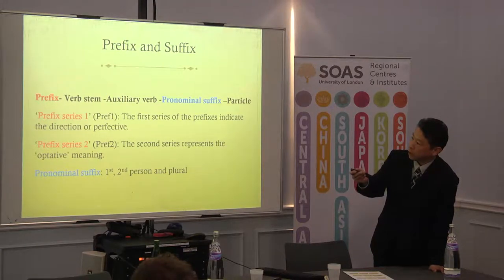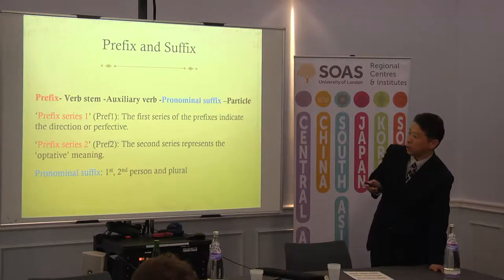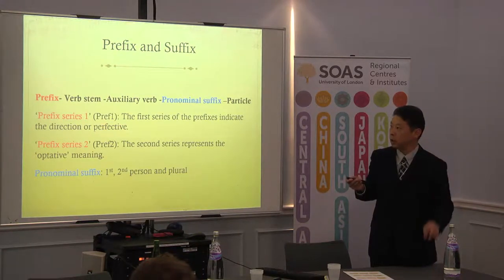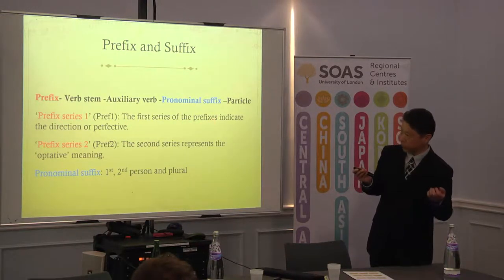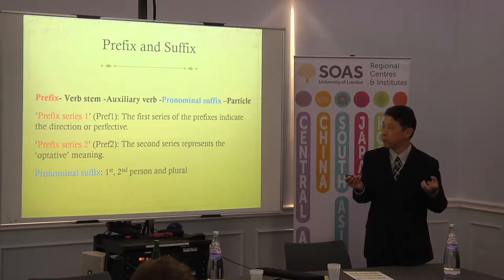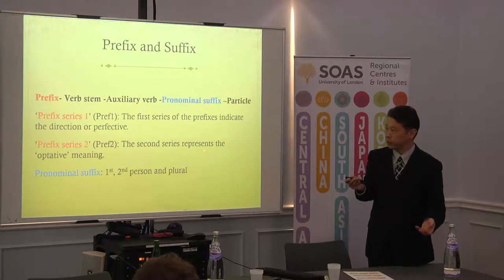That consists of the verb phrase. And the prefixes and pronominal suffix, and in some cases there are also particles. The prefixes are divided into two series. The first series of the prefixes indicates the direction of the action or motion, or perfected aspect. The second series represents the optative mood meaning.